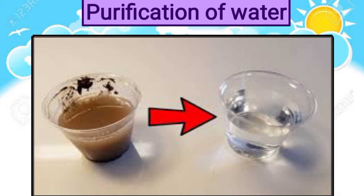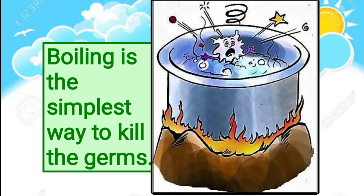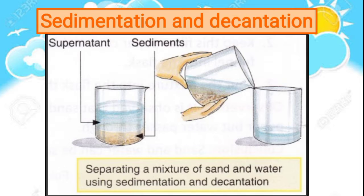Now let's understand purification of water. We should drink only clean water because dirty water can make us fall ill. Water from taps can also be dirty and impure, so water used for drinking and cooking needs to be purified. One method is boiling — it is the simplest way to kill the germs found in water. Bring water to a rolling boil for a minute to kill the germs present in it. Boiled water should be stored in clean and covered pots or bottles.